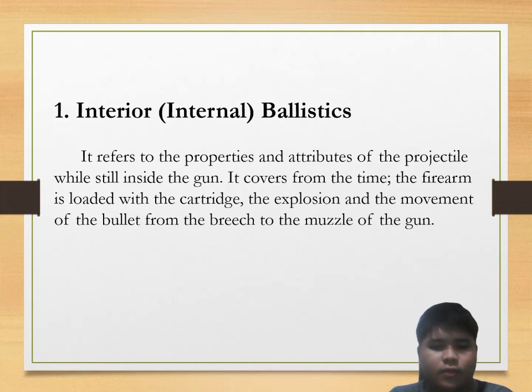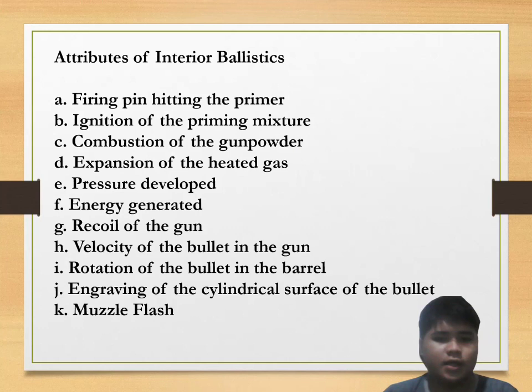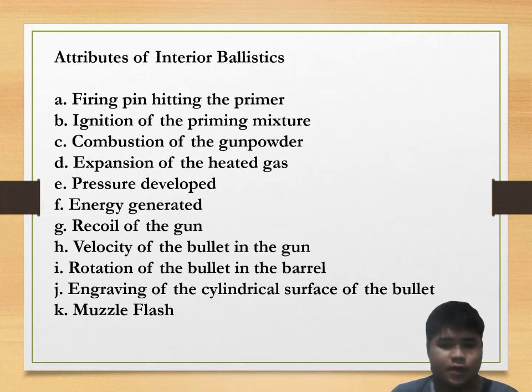The attributes of interior or internal ballistics include: firing pin hitting the primer, ignition of the priming mixture, combustion of gunpowder, expansion of heated gas, pressure developed, energy generated, recoil of the gun, velocity of the bullet in the gun, rotation of the bullet in the barrel, engraving of the cylindrical surface of the bullet, and muzzle flash.